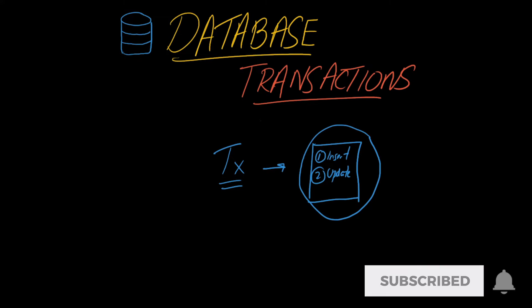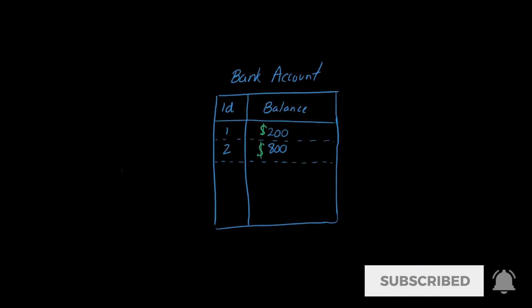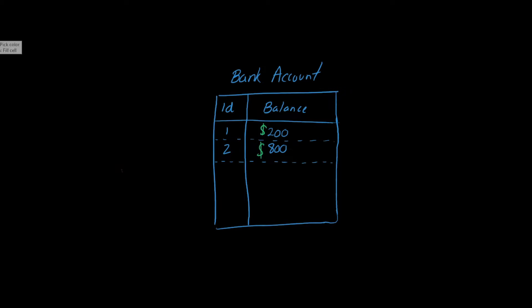Let's explain this using a practical example. Down here I have a bank account table and in this table we have two bank accounts - one with a balance of $200 and another with a balance of $800. Say we want to do a fund transfer, we want to move the $200 from the first account to the second account.